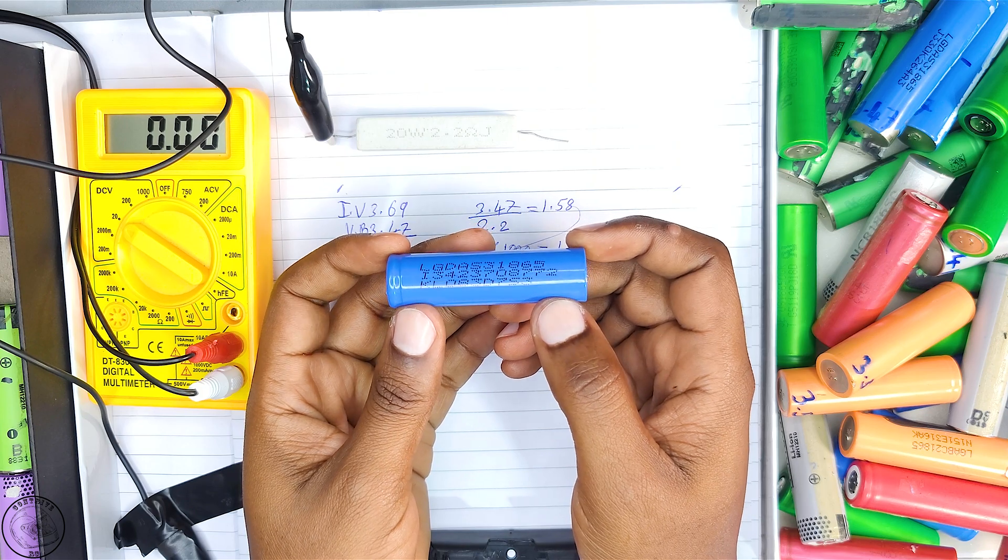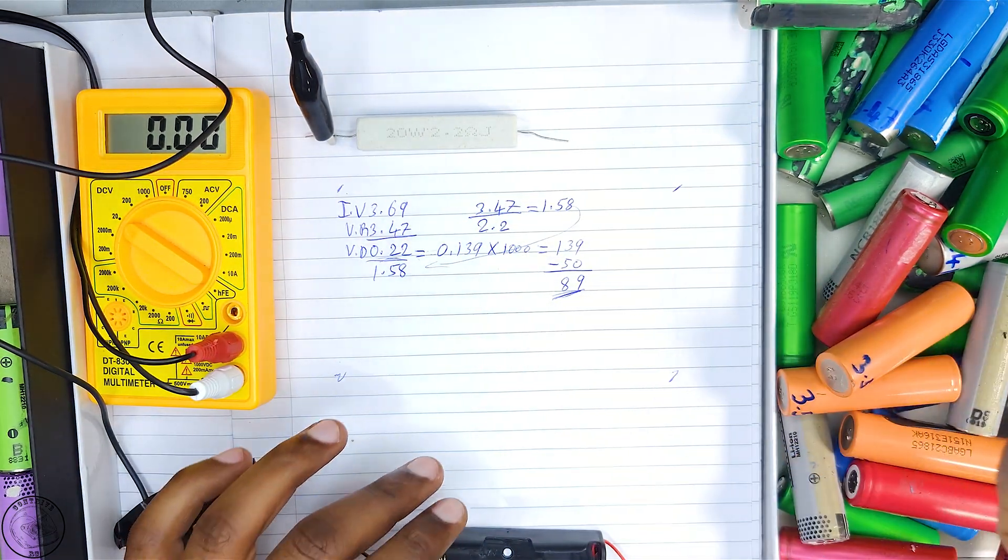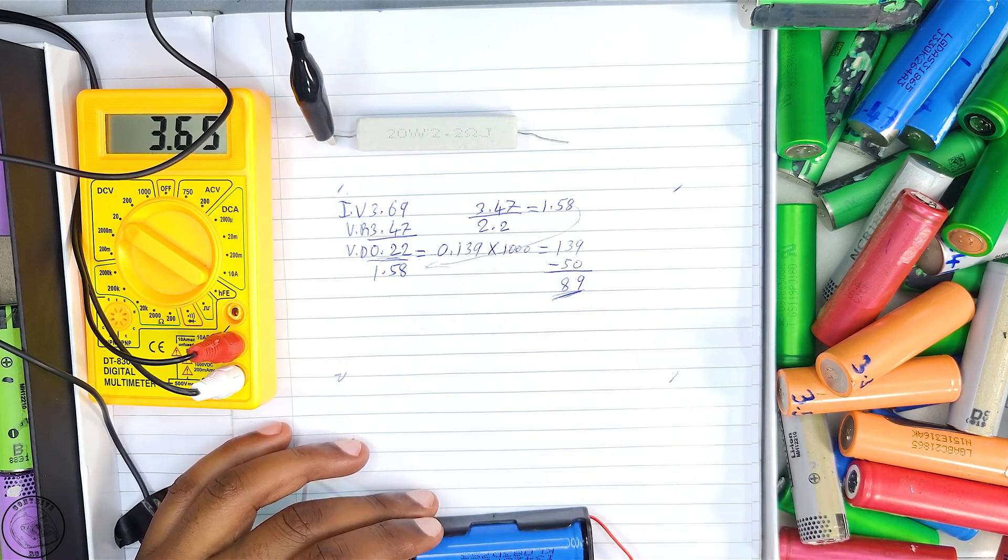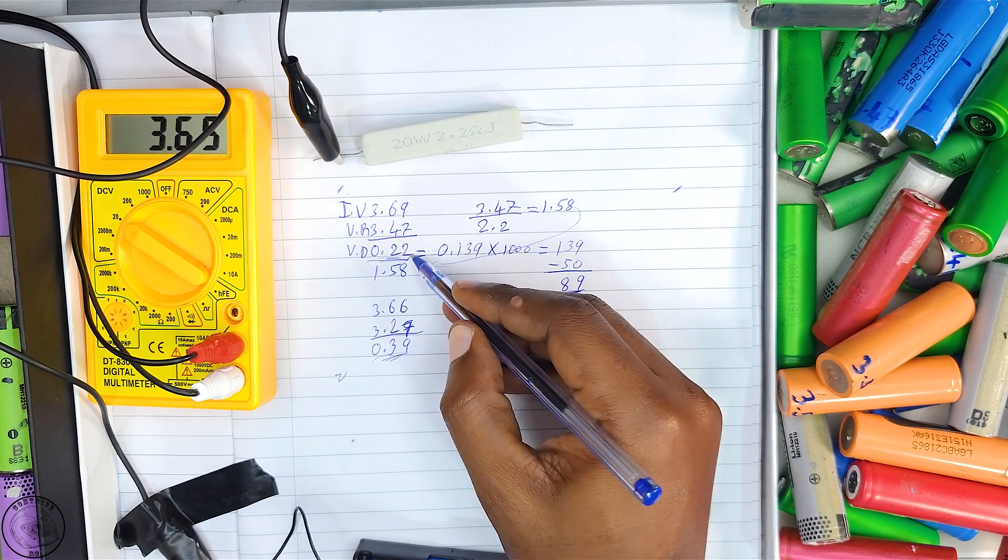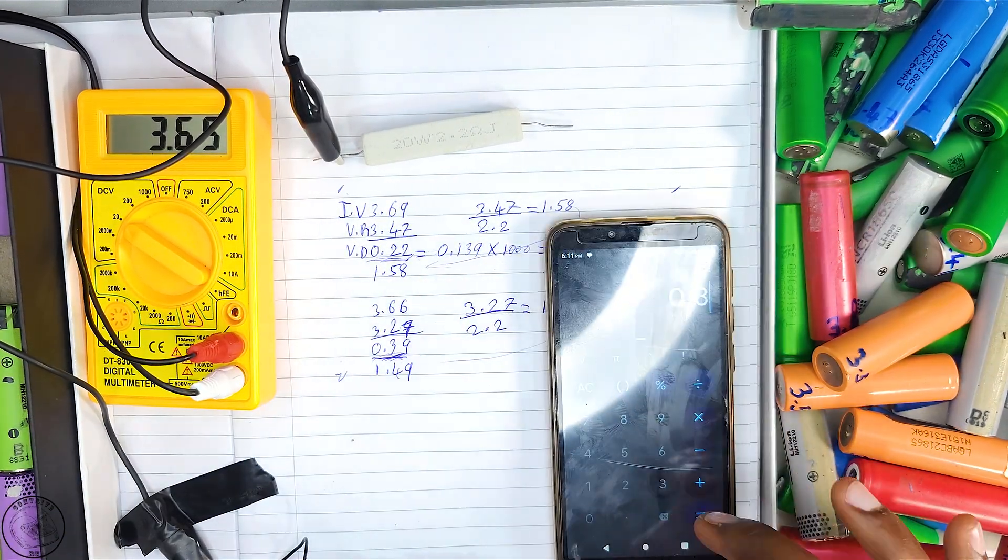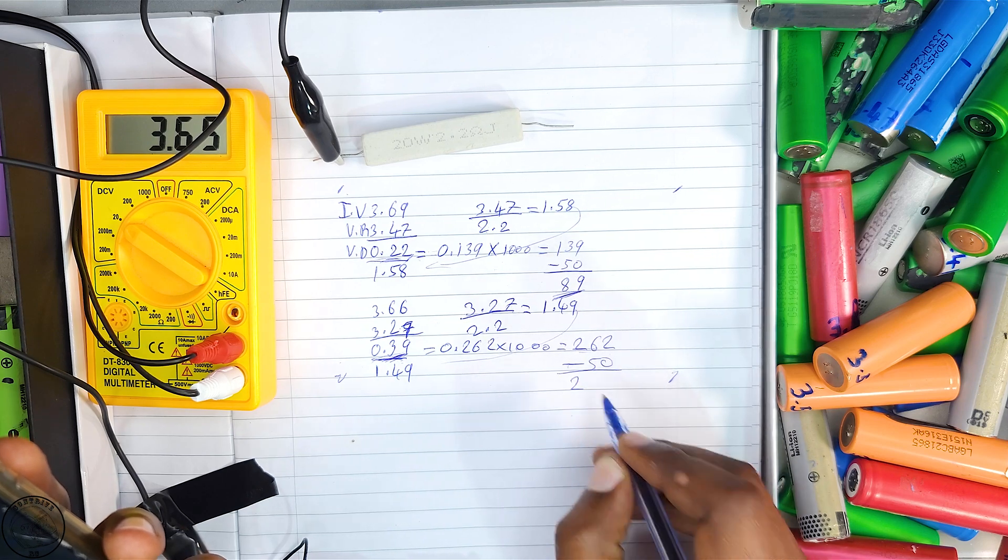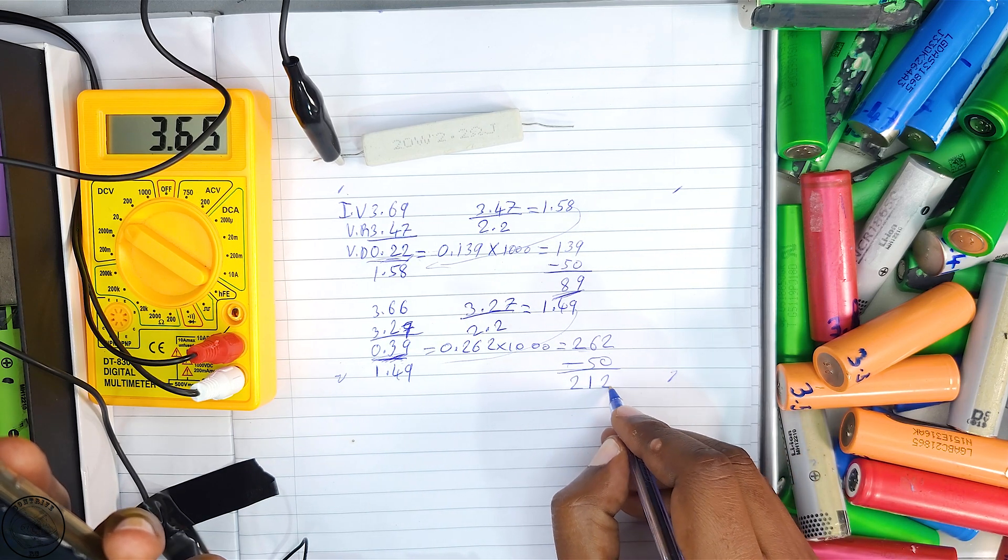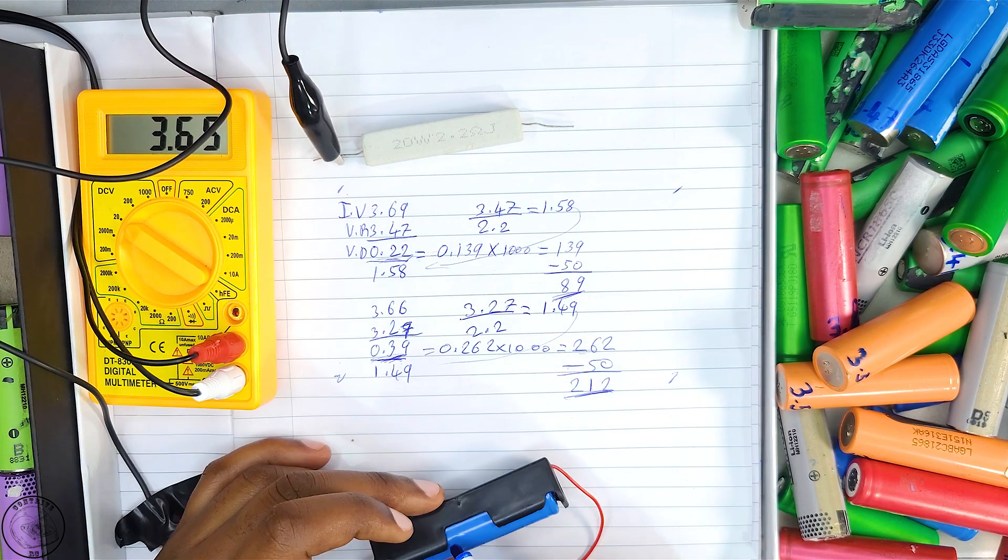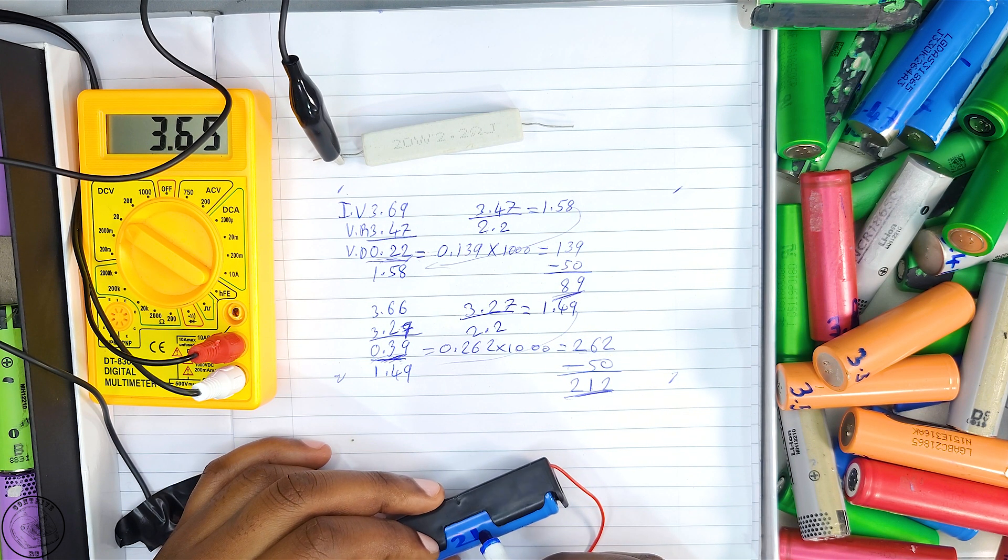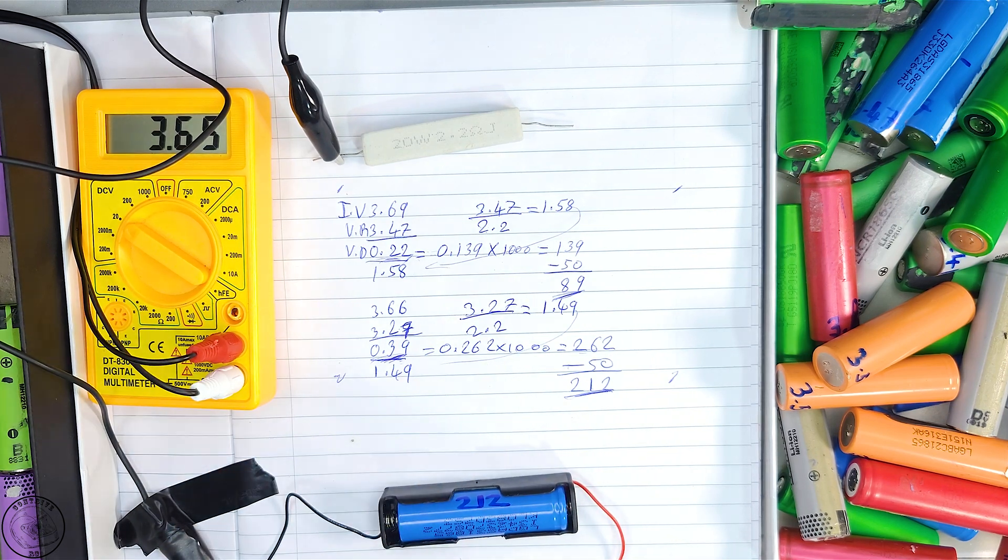Next, I tested a cell produced by LG, a South Korean brand. Using the same formula and accounting for 50 milliohms of wire resistance, I arrived at 212 milliohms. This significantly exceeds my threshold of under 100 milliohms, indicating this cell wouldn't be viable for my battery pack.